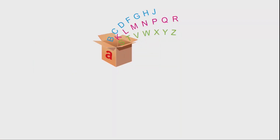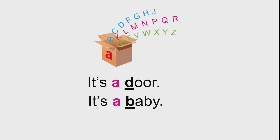Why do you think we use an indefinite article A in some sentences and AN in other sentences? Look. We use an indefinite article A if the word starts with a consonant — B, C, D, F, G, etc. For example: It's a door. It's a baby. It's a teacher. See, door, baby, teacher — they all start with the consonants B, D, T. The correct article to use is A.